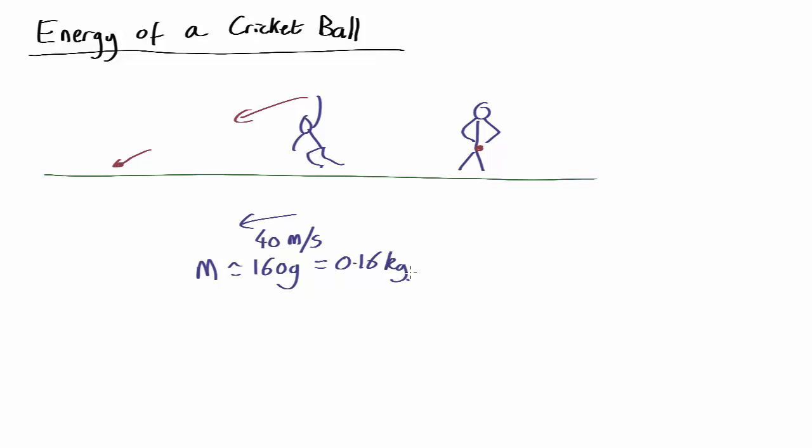So the kinetic energy is one half mv squared. So that's a half times 0.16 times 40 squared, which comes out as 128 joules. So that's the energy you've given to a cricket ball when you are one of the world's greatest fast bowlers and you throw a vicious fast ball down the pitch.